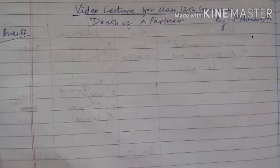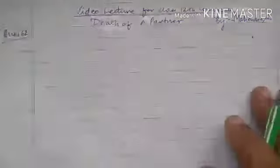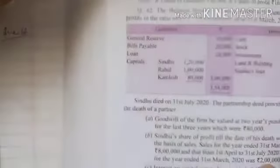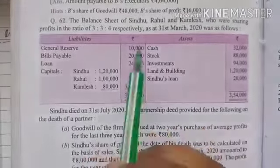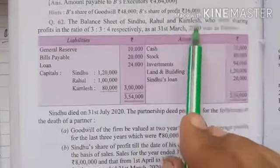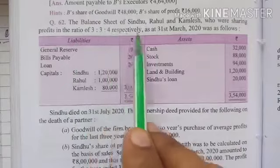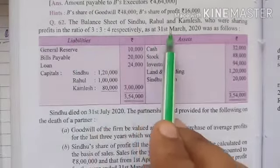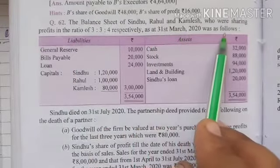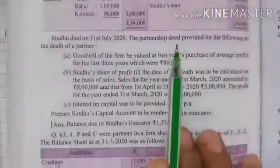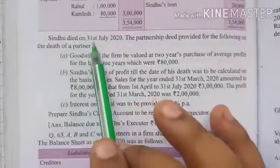Now we will be doing question number 62, so just pay attention. The question says balance sheet of Sindhu, Rahul and Kamlesh, who was sharing profit and loss in the ratio 3:3:4 respectively, as at 31st March 2020 was as follows. This is the balance sheet already given to you.